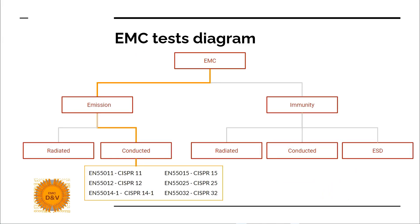This is a typical EMC test diagram that you will see in other materials. Electromagnetic compatibility tests are divided into emission and immunity. For emission, we have radiated emission and conducted emission. For immunity, we have radiated immunity, conducted immunity, and ESD electrostatic discharge. Conducted emission is a type of emission test that is conducted.